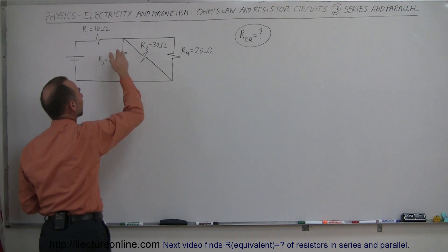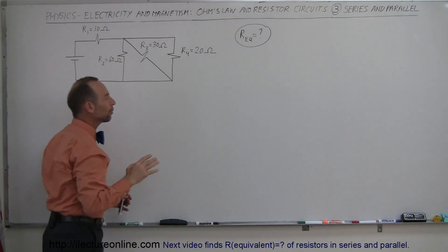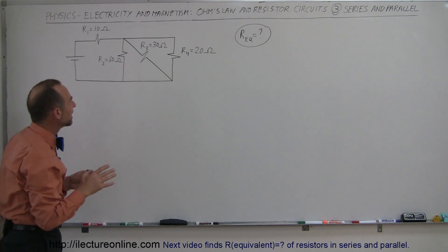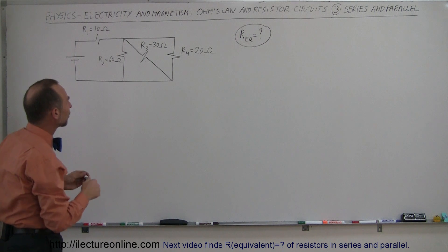Now the current can go through this branch, to this branch, it can go this way. But the way it's drawn doesn't really lend itself to figuring out what's going on.